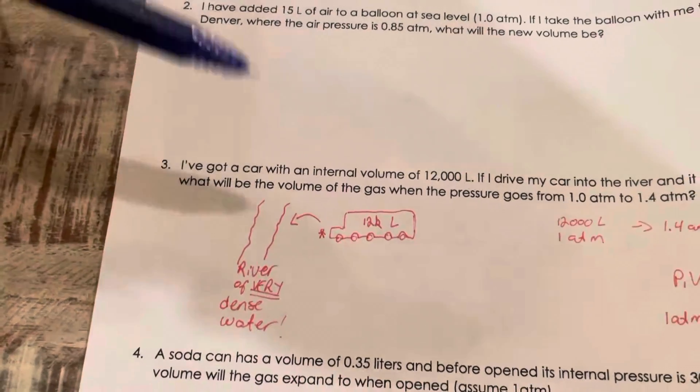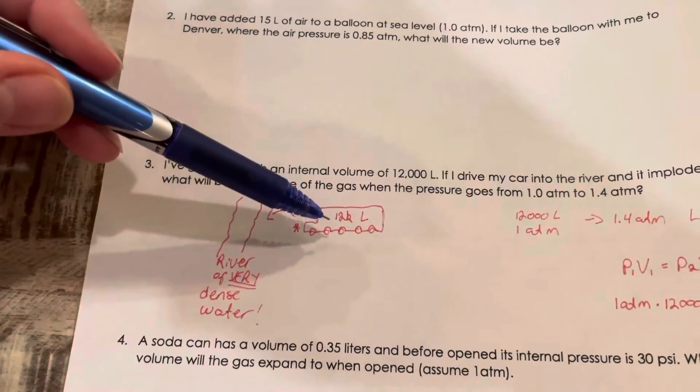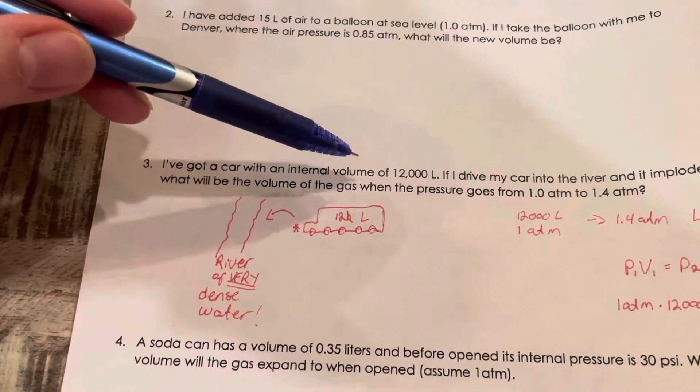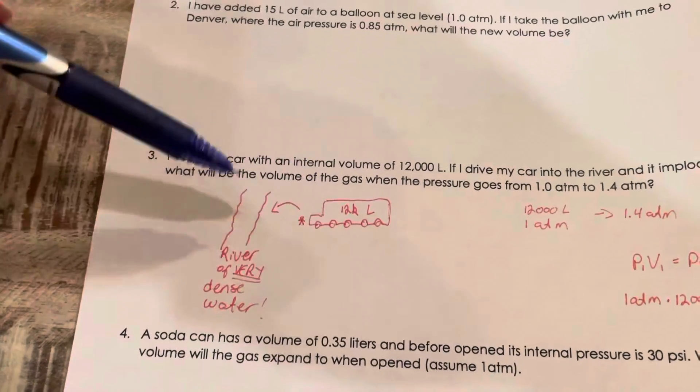So I don't know if this is a river of very very dense water or if it's like a river of rock or something, but somehow this very huge car, trailer truck-ish, implodes when I drive it into the river.